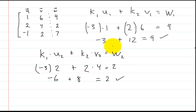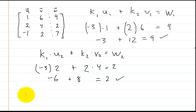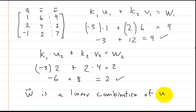So that's actually how you check to see if vectors are linear combinations. Vector W is a linear combination of U and V. That's how you do it — I hope that made sense. I also want to make one more video where vector W is NOT a linear combination of U and V, so you can see what that looks like.